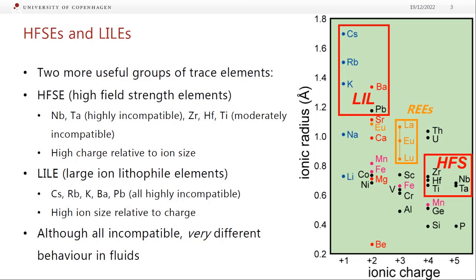Some people would put the rare earths into the same group, but I think it makes more sense to keep them separate. For the purpose of this course, the high field strength elements are niobium and tantalum, which have a 5 plus charge and are relatively small — these are highly incompatible in most things. We also have zirconium, hafnium, and titanium. Titanium becomes compatible once you start crystallizing iron-titanium oxides, and even later you can crystallize things like ilmenite. Zirconium and hafnium are pretty incompatible until you crystallize zircon, which is zirconium silicate.